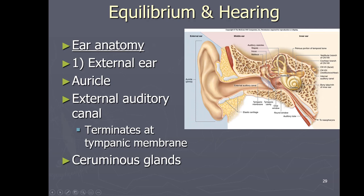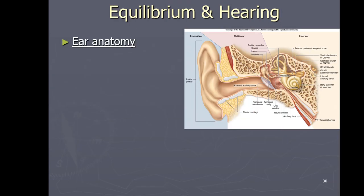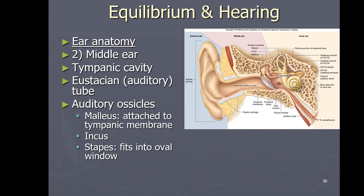The eardrum is called the tympanic membrane — that's the termination of the external ear. The other thing going on in the ear canal is we have ceruminous glands, which secrete cerumen, or earwax.